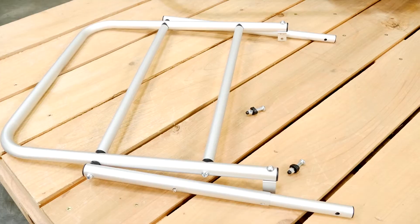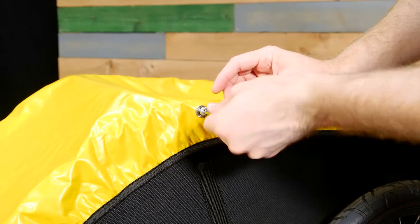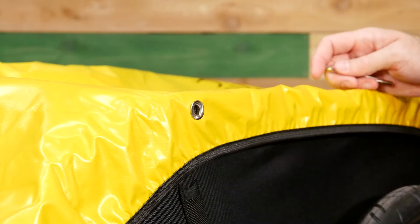In this video we will go over how to install the Nomad cargo rack. First, remove the existing screws holding the cover on both sides of the Nomad.